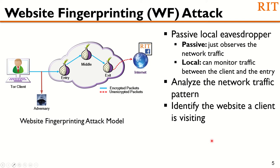A website fingerprinting attacker is considered as a local passive eavesdropper. Passive means the attacker does not have the capability to modify, insert, or delete any packets — he can only observe the network traffic flow. Local means that the attacker has the ability to monitor the traffic between the client and the entry node.